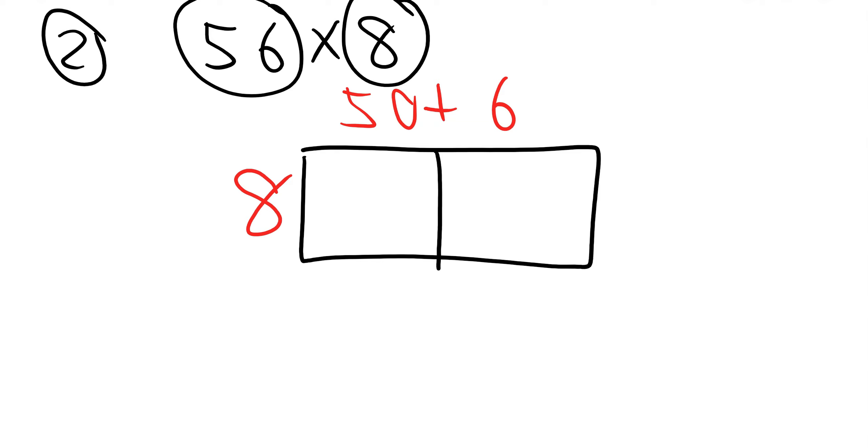Our next step is to multiply. 50 times 8? Well, I know that 5 times 8 is 40. So I'll start by writing 40 in the box. And there's one more 0 in the 50. So I put another 0. It's 400. Next, I'm going to multiply 8 times 6. 8 times 6 is 48.